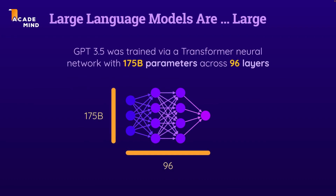In the case of the GPT 3.5 model, which is one model available through ChatGPT, there were more than 170 billion parameters organized across 96 layers used in that neural network to create this GPT model. The exact technical details are definitely not important for this course and not important in order to use ChatGPT. What is important, though, is to simply understand and be aware of the fact that these GPT models are quite complex models that complete sequences of words and predict words based on billions of parameters.